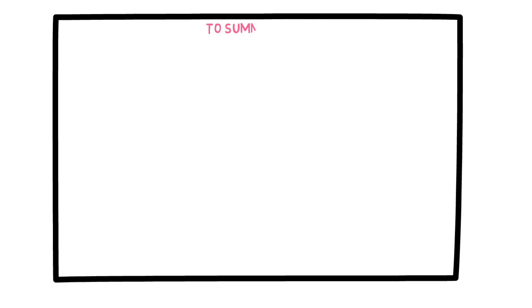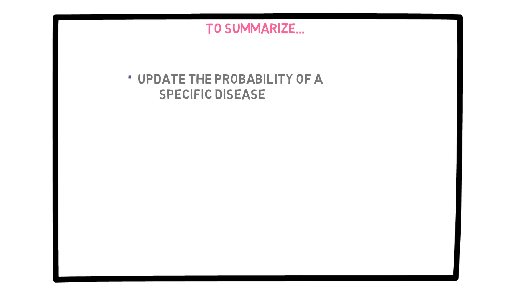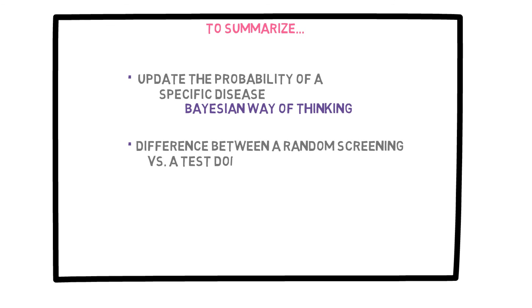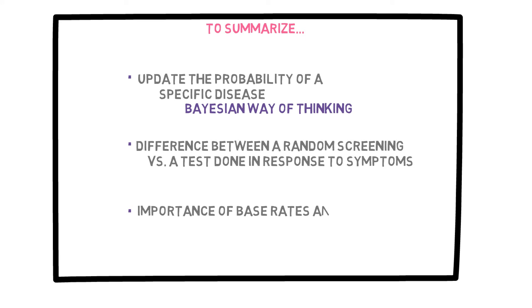To summarize, in this video we discussed how to update the probability of a specific disease given some evidence. We started with the probability of a disease and, given more evidence, we were able to update this probability — a process involving the Bayesian way of thinking. We also briefly discussed the difference between a random screening and a test conducted in response to actual symptoms, and I stressed the importance of keeping base rates in mind when dealing with illnesses, as well as always consulting with a medical professional before jumping to any conclusions. Thank you for watching.